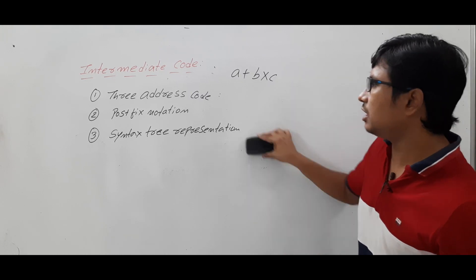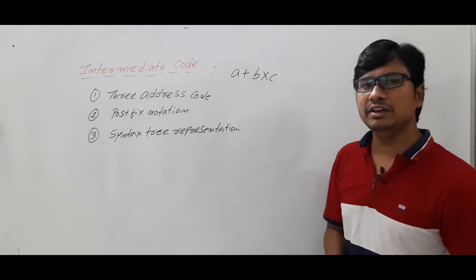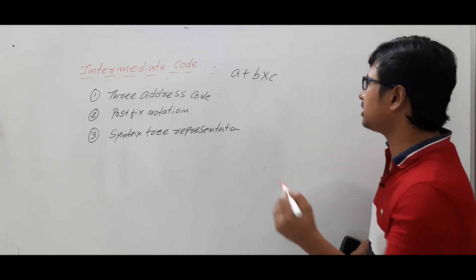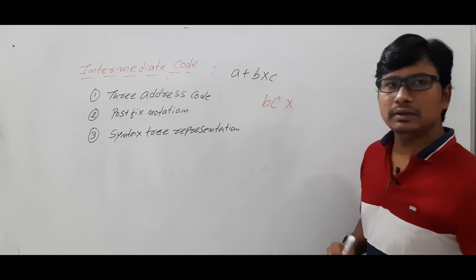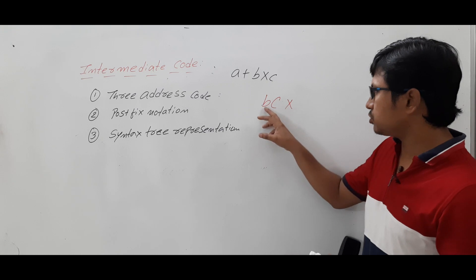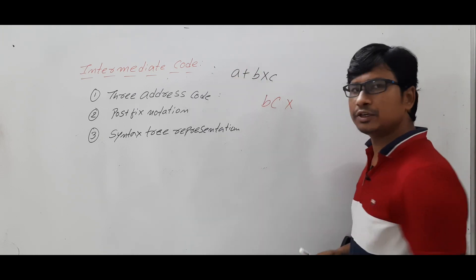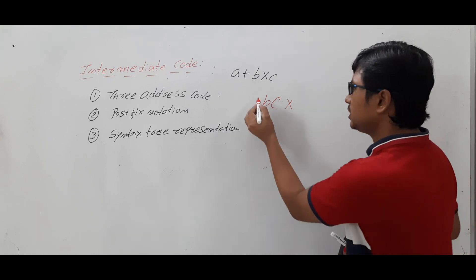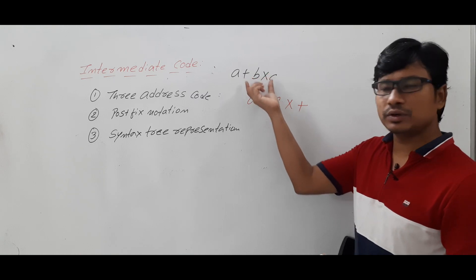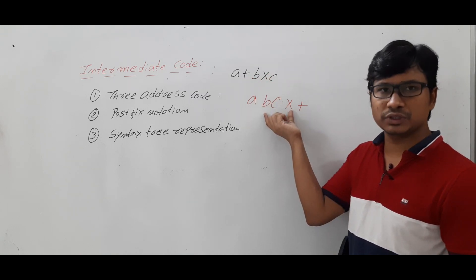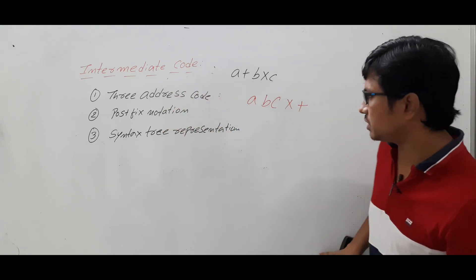Now let me discuss the postfix notation. If I have the expression a + b * c and I want to represent it in postfix notation, I first handle b * c, which in postfix is b c *. After that I perform the addition with a, so it becomes a b c * +. This is how the infix notation is represented in postfix notation, and we can also represent intermediate code in postfix notation.